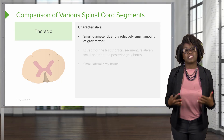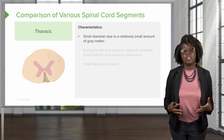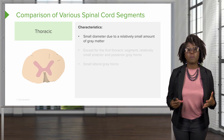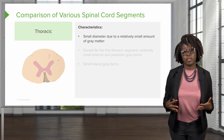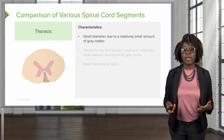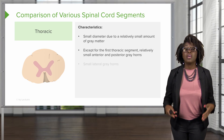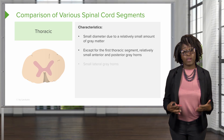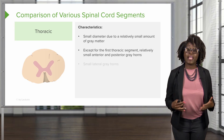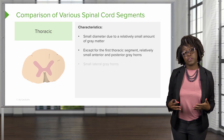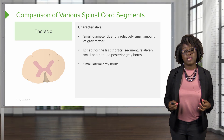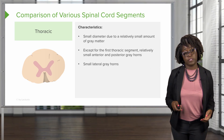The next spinal cord segment is the thoracic segment. The diameter of this segment is a bit smaller than that of the cervical segment, and this is due to its relatively small amount of gray matter. Except for the first thoracic segment, it also has a relatively small anterior and posterior gray horn. And it also contains a small lateral gray horn.